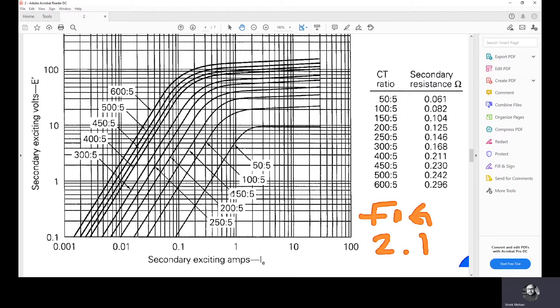And in the question, it is given that the CT ratio is 100 is to 5. So, this one is the CT. The corresponding secondary resistance is 0.082. Secondary resistance is Z dash or secondary impedance is Z dash. Here it is resistance. What is given is resistance. So, the total impedance will be Z dash plus ZB. Burden plus leakage impedance. So, 0.082 plus burden. Burden is also given in each case 0.5 ohm is the burden.